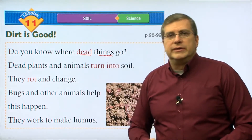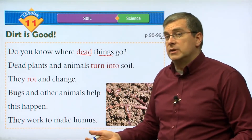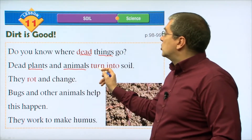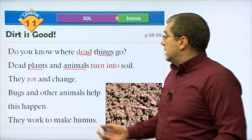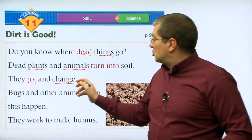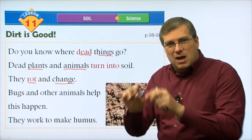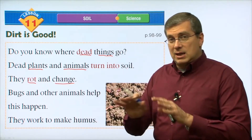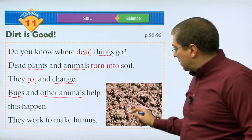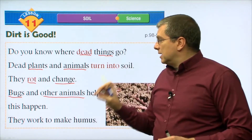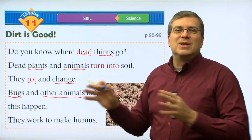When we talk about dirt, soil is the top layer of dirt. Just like a chocolate cake has different layers, there are different layers of dirt, and soil is the very top layer. Soil is good because plants and trees both grow in soil — it helps them grow strong. That's why soil is important.